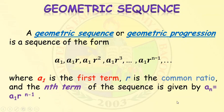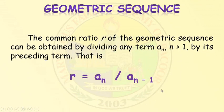That is our formula. In a geometric sequence, we have what we call the common ratio. The common ratio, denoted as r, can be obtained by dividing any term a sub n (where n must be greater than 1) by its preceding term. That is, r equals a sub n over a sub n minus 1.